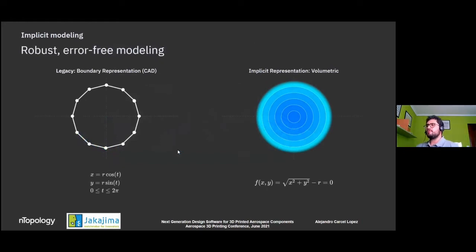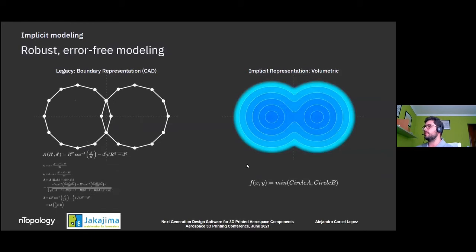The goal is to provide a robust, error-free modeling technique that allows us to work with complex structures. Starting with a basic circle: when we represent it in CAD boundary representation software, we describe some parametric equations and discretize those. Whereas in an implicit approach, we do a volumetric description of that geometry. When you want to do a boolean union with another object in boundary representation, that intersection calculation gets complicated. However, with the volumetric approach this becomes much more simple — it's just a minimum function between the two objects.